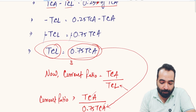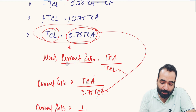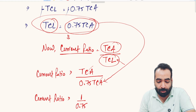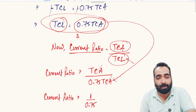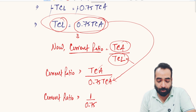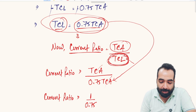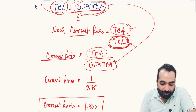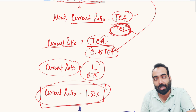Now, recall the current ratio formula: Current Ratio = Total Current Assets ÷ Total Current Liabilities. Since TCL = 0.75 × TCA, we substitute: Current Ratio = TCA ÷ (0.75 × TCA). The TCA cancels out, leaving Current Ratio = 1 ÷ 0.75 = 1.33x. This is the mathematical proof of why MPBF Method 2 requires a minimum current ratio of 1.33x.